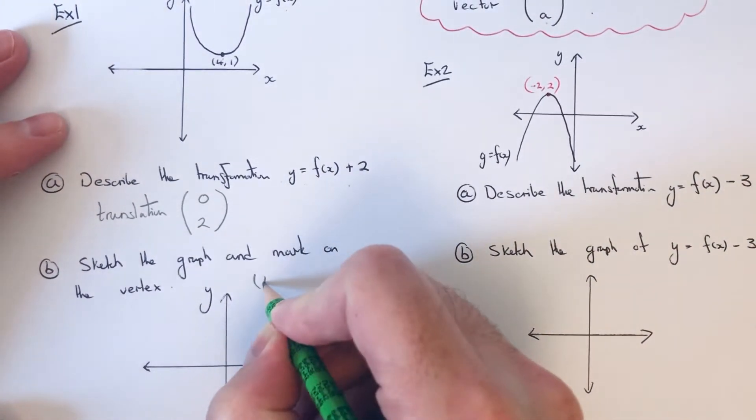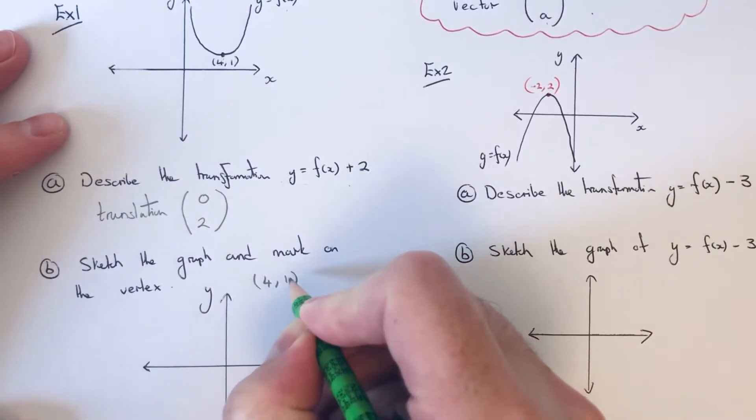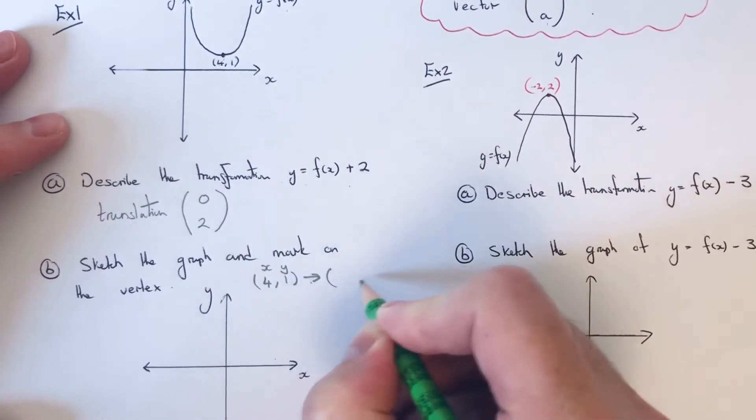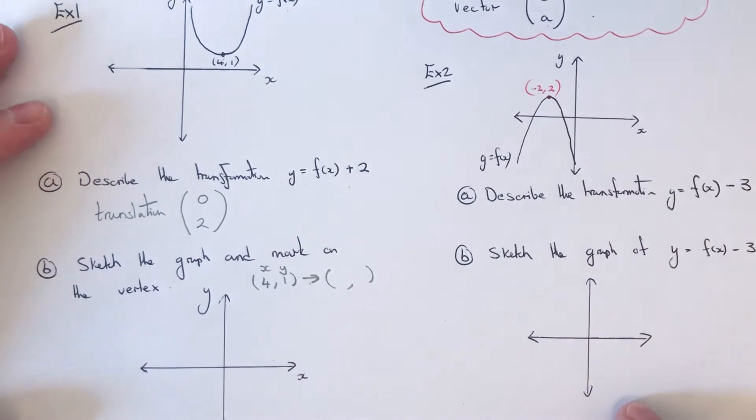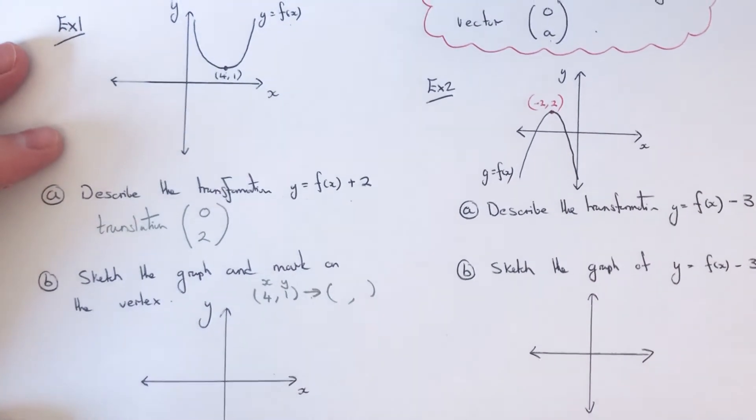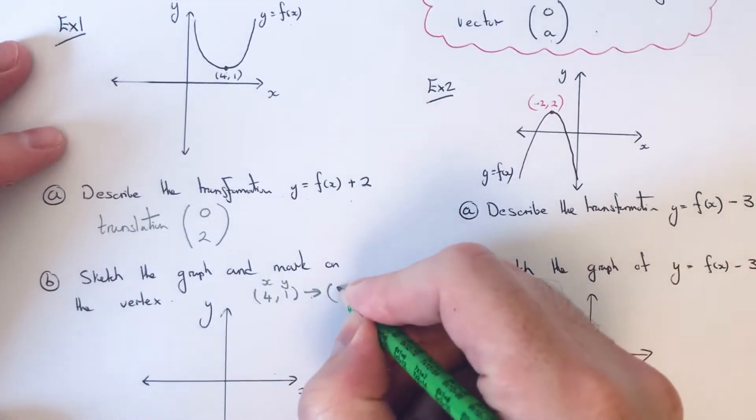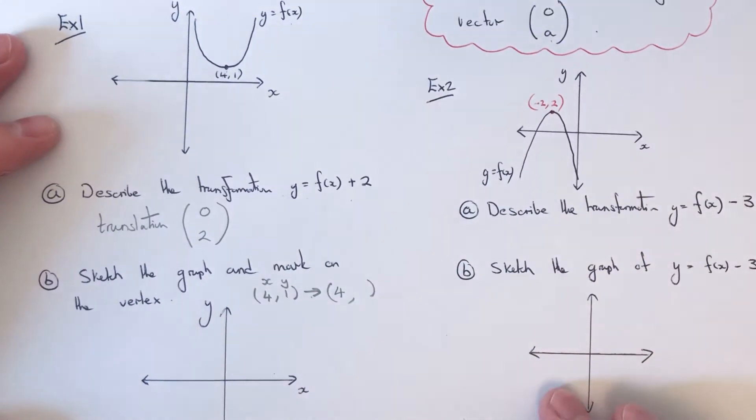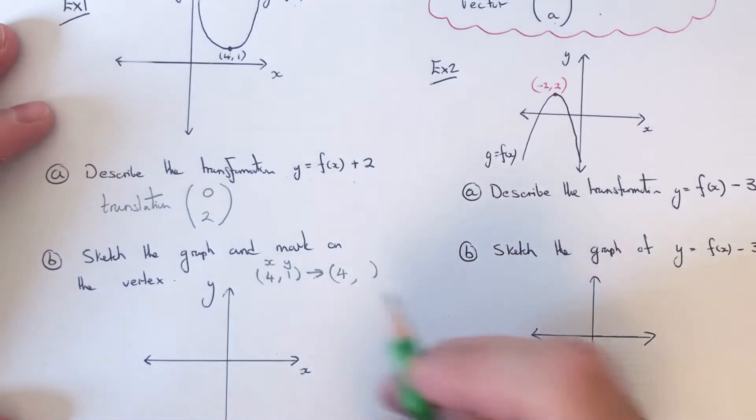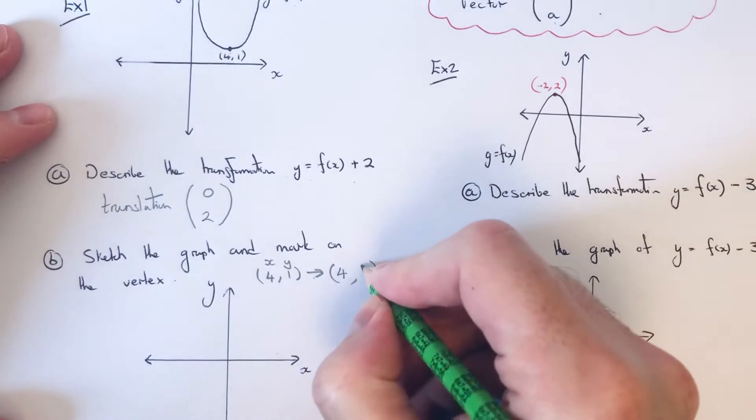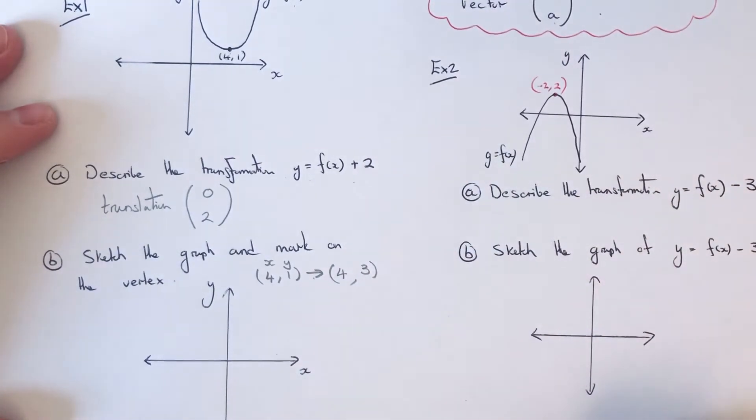So our original vertex was at the point 4, 1. Our vector is at 0, 2 which basically means we need to add 2 to the y coordinate. Don't do anything to the x coordinate, we're not changing that one. So we're just going to add 2 onto the y coordinate so our vertex will be at 4, 3 instead of 4, 1.